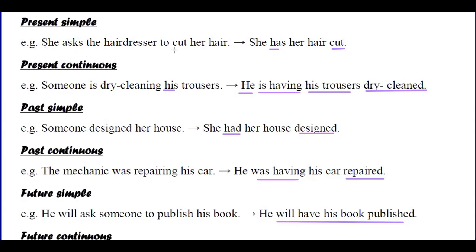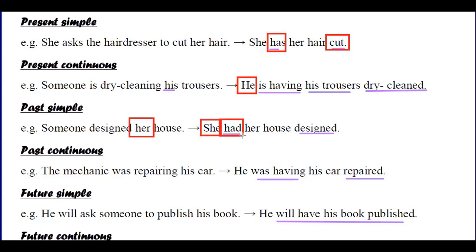Causative examples: Past simple — 'She asks the hairdresser to cut her hair' becomes 'She has her hair cut.' Present continuous — 'Someone is dry cleaning his trousers' becomes 'He is having his trousers dry cleaned.' Someone designed her house — 'She had her house designed.' The mechanic was repairing his car — 'He was having his car repaired.'